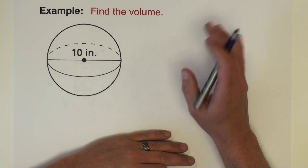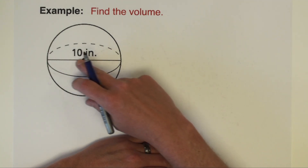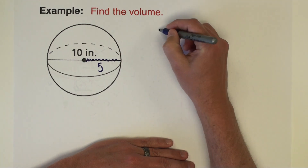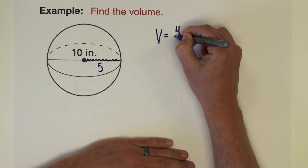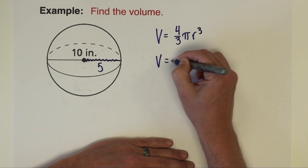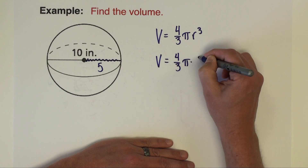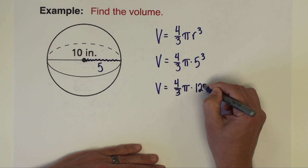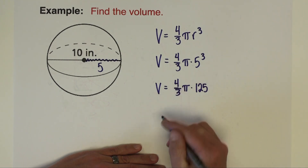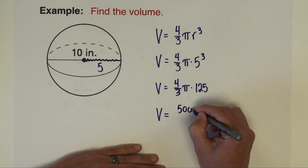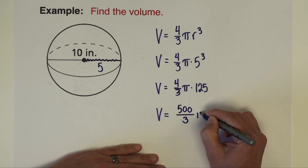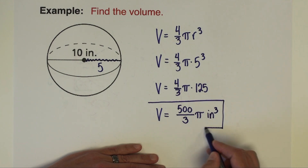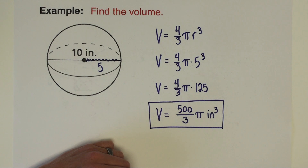The next example is a volume problem where you're given the diameter of a sphere. The diameter is 10, so we cut that in half to get a radius of 5. Our volume formula is (4/3)π times radius cubed, so (4/3)π times 5³. 5 to the third power is 125. 125 doesn't divide by 3, so we multiply up to the 4 and get 500 thirds pi. Units are inches, so the exact answer is 500π/3 cubic inches.